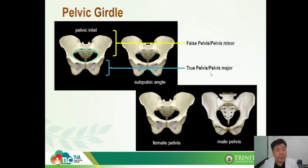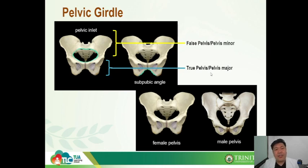Most importantly, note the difference in the appearance of male and female pelvic inlets. The design of the female pelvis is for childbearing — if you notice, it is wider, to allow the baby to pass through.